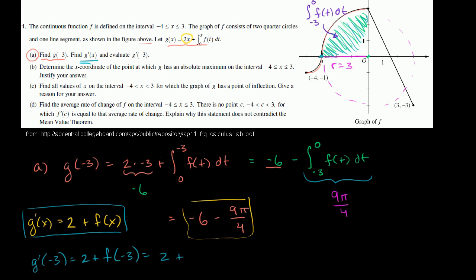When x is equal to -3, our function is at 0. So f(-3) is just 0. So it's just 2 plus 0, which is equal to 2. So g'(-3) is equal to 2. And we're done with part A.